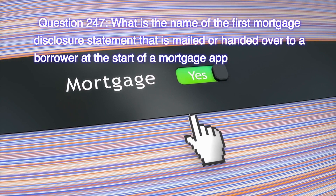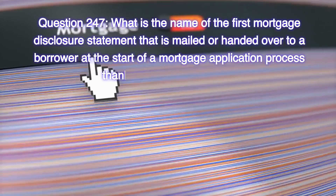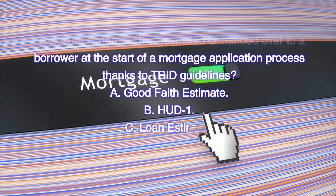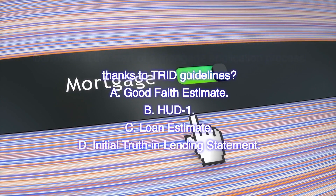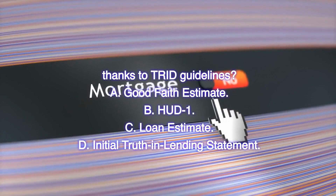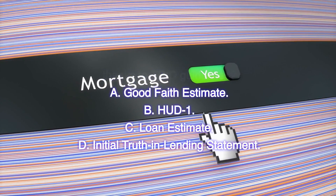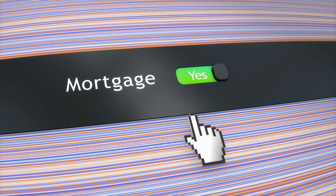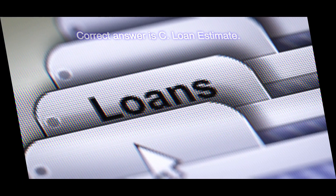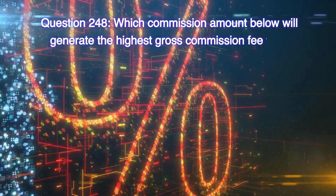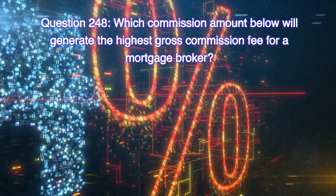Question 247: What is the name of the first mortgage disclosure statement that is mailed or handed over to a borrower at the start of a mortgage application process, thanks to TRID guidelines? A) Good Faith Estimate, B) HUD-1, C) Loan Estimate, D) Initial Truth in Lending Statement. Correct answer is C, Loan Estimate.